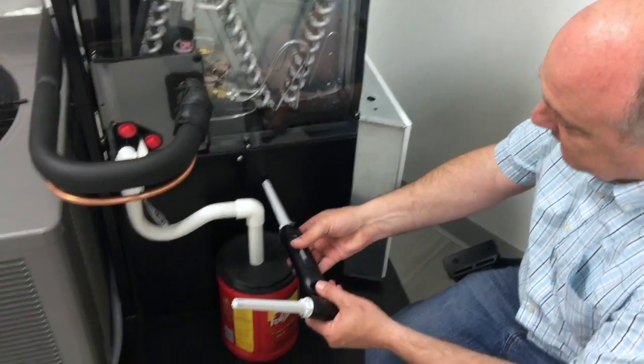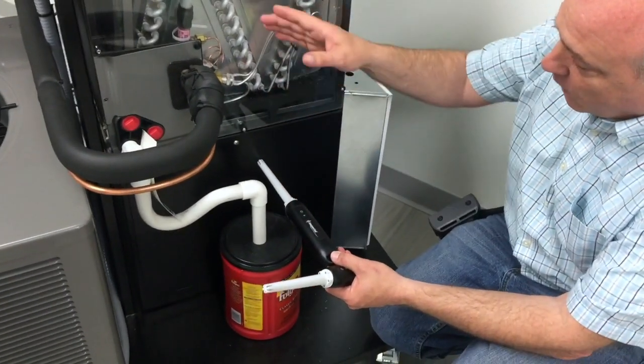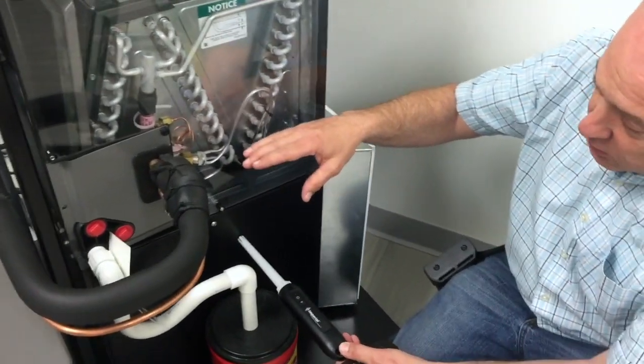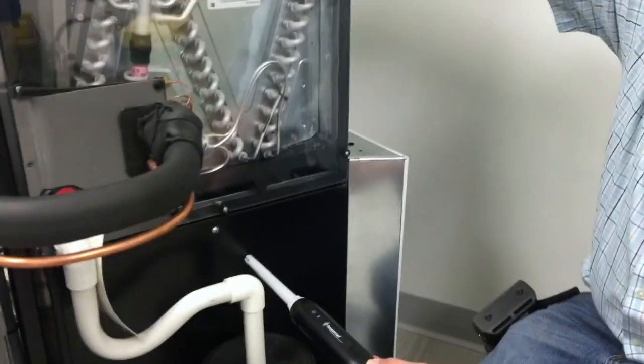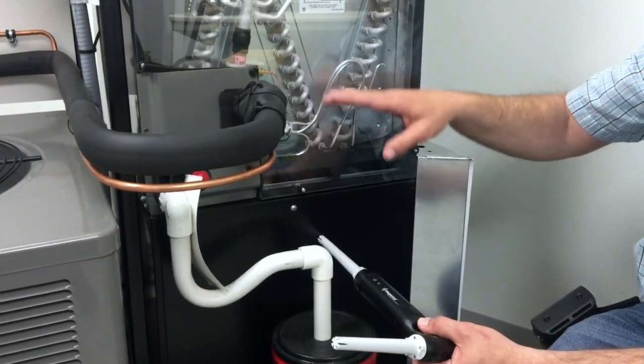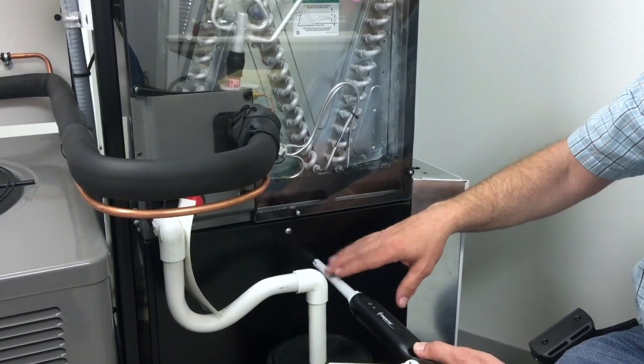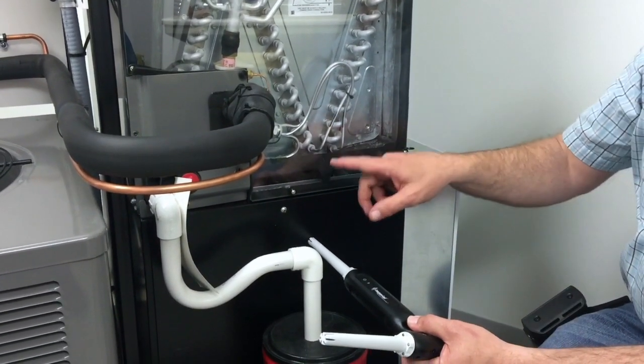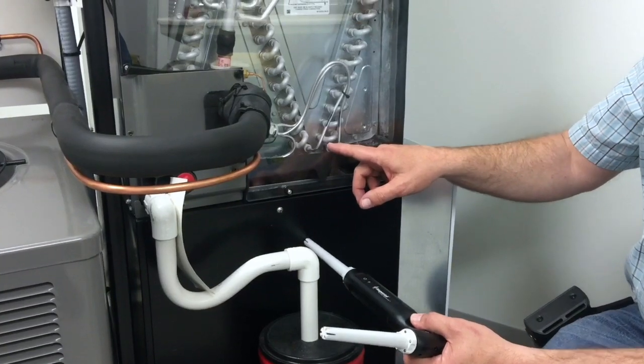We don't want to be down here in the bottom right below the coil. Heat travels from hot to cold and it's called radiant cooling. So even though the air is flowing up this direction, the probe will still get influenced by the cold evaporator coil. If the probe can see the coil, the temperature will be influenced. So we do not want to be directly below the evaporator coil.